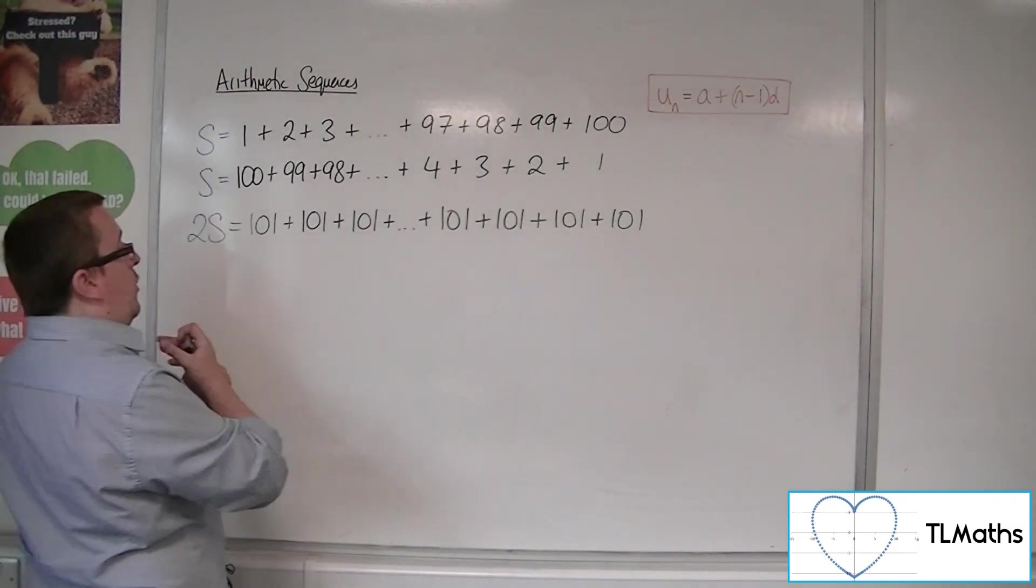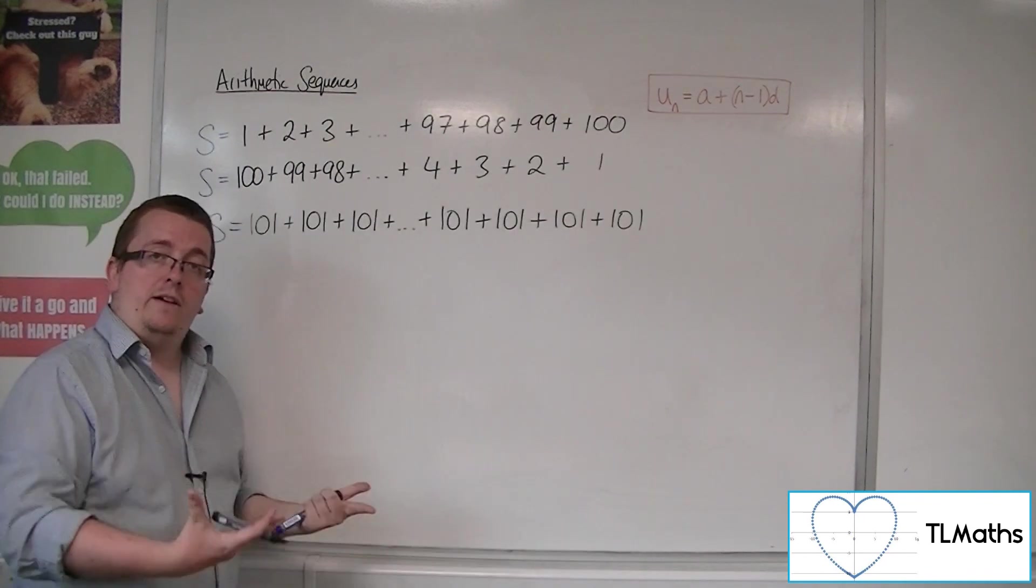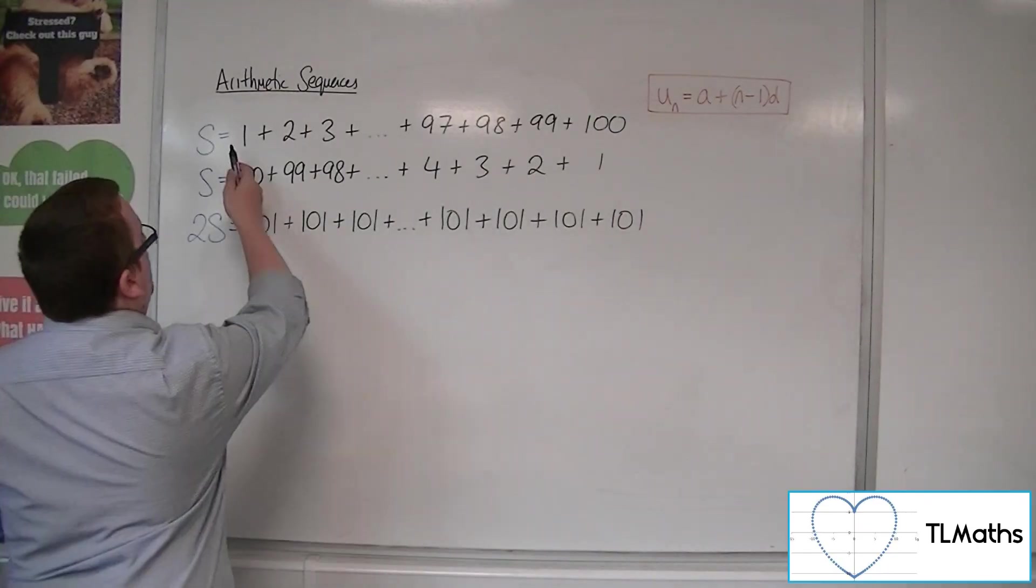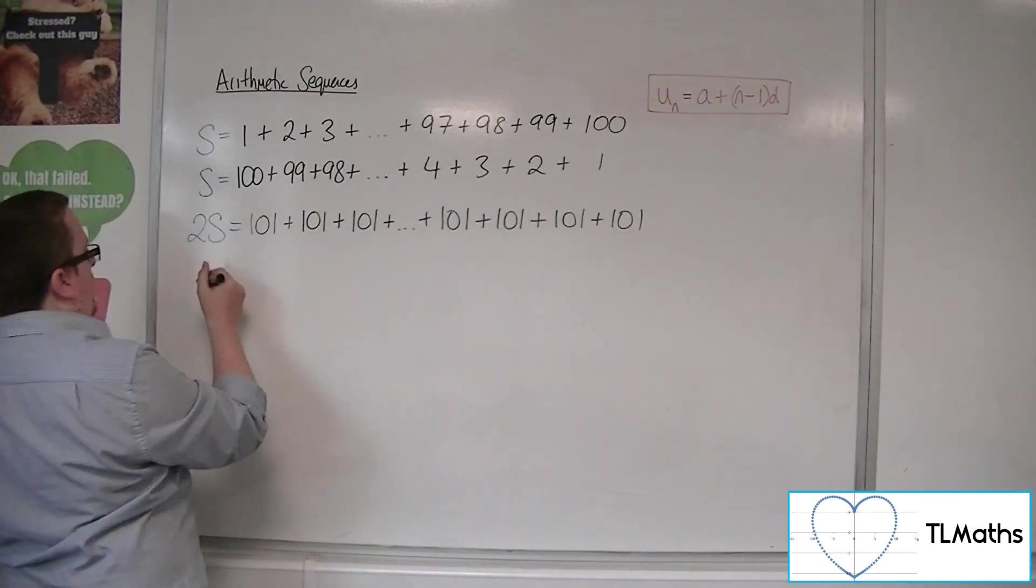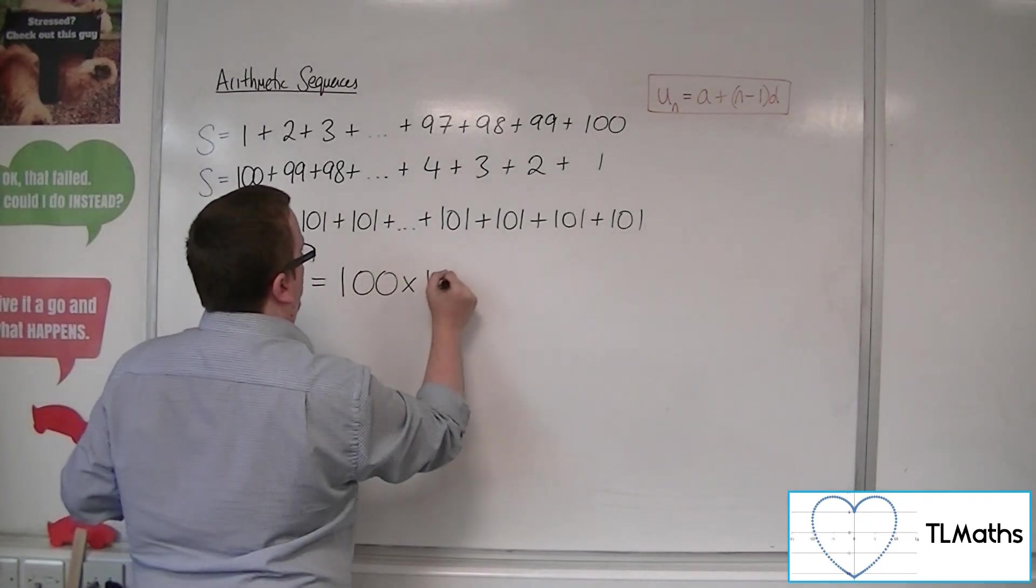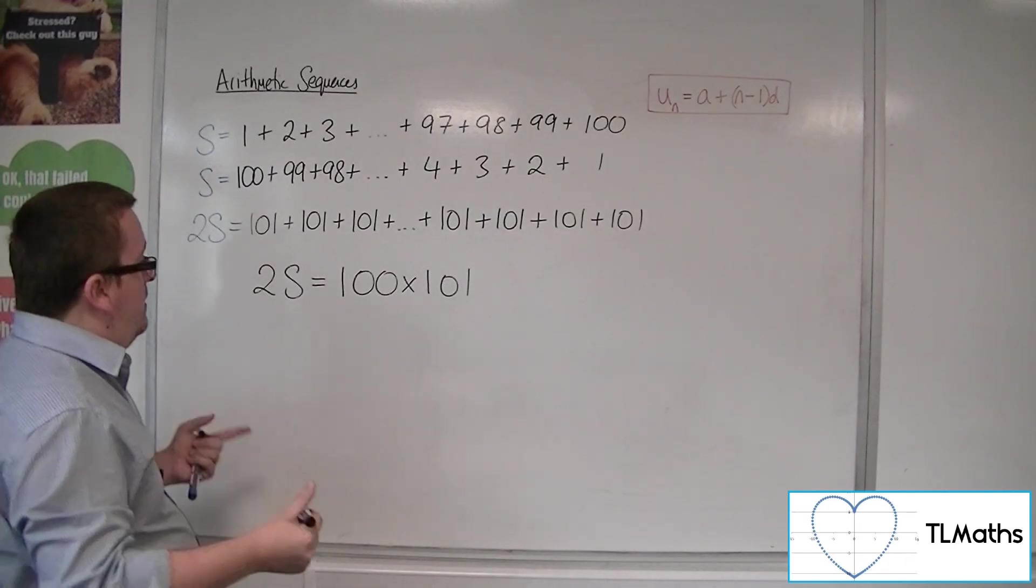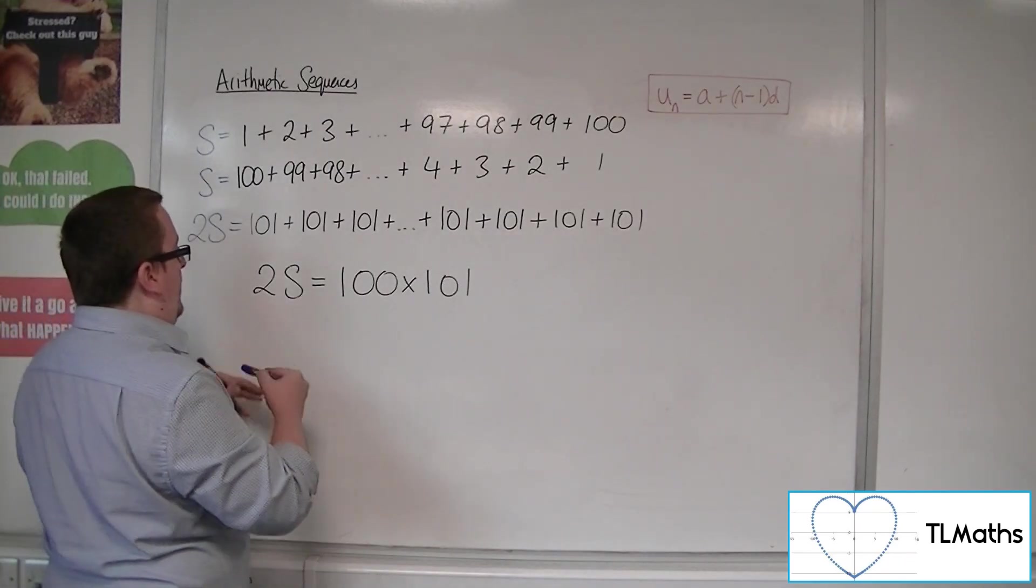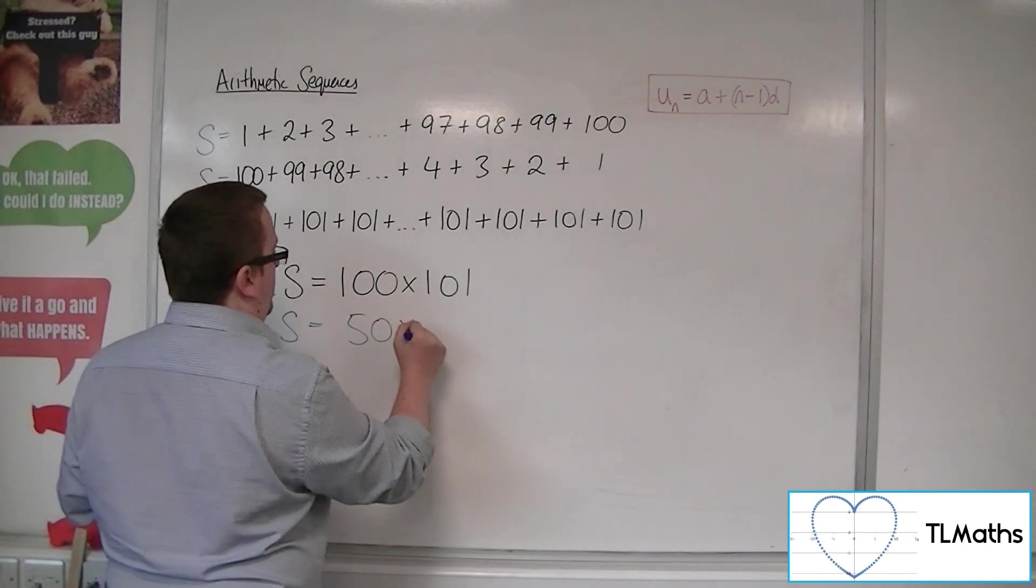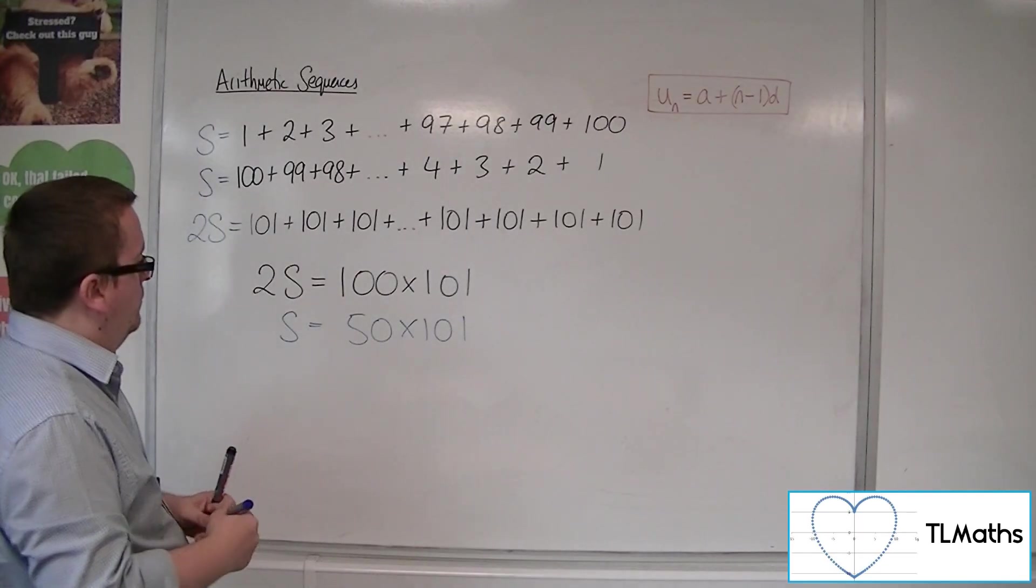Now, because I've got this, I can then say, well, how many 101's do I actually have? Well, I've got 100 of them, going from 1 up to 100. So I could write that 2S is actually 100 lots of 101. So then, that means that S has to be, dividing both sides by 2, 50 lots of 101.